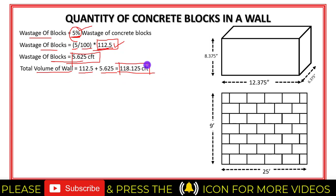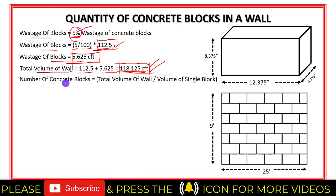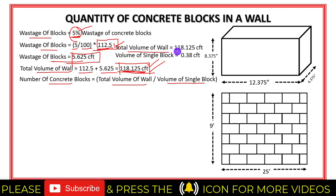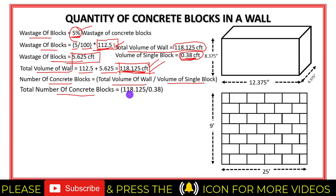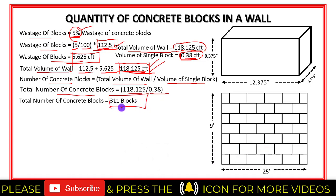The total volume of the wall is 118.125 cubic feet, and the volume of a single block is 0.38 cubic feet. The number of concrete solid blocks equals volume of wall divided by volume of a single concrete block: 118.125 ÷ 0.38 = 311 blocks. So in the construction of this 25-foot long and 9-foot high wall, I will need 311 concrete blocks.